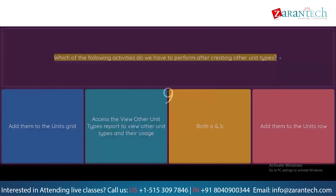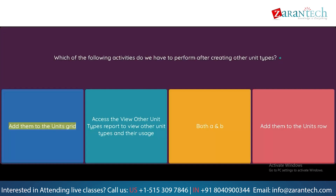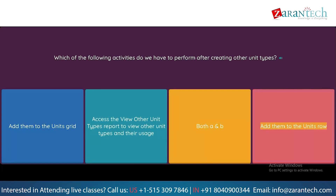Question: Which of the following activities do we have to perform after creating other unit types? Option 1: Add them to the units grid. Option 2: Access the View Other Unit Types report to view other unit types and their usage. Option 3: Both A and B. Option 4: Add them to the units row.